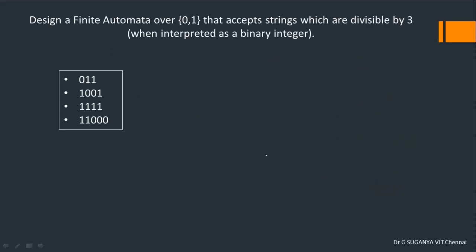Can you see any common pattern among the accepted strings? In whatever finite automata we have designed so far, we had the practice of looking for a common pattern. Having looked at the strings that need to be accepted by the automata, it is clear that no particular common pattern is found. No pattern matching is available, and hence the procedure which we have applied for pattern matching is not possible here.